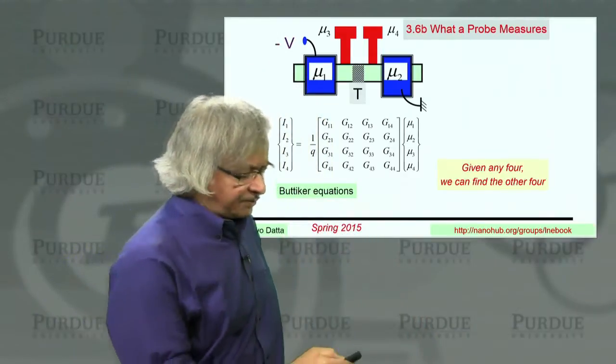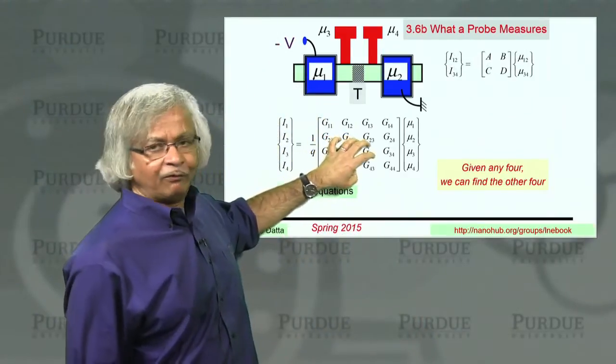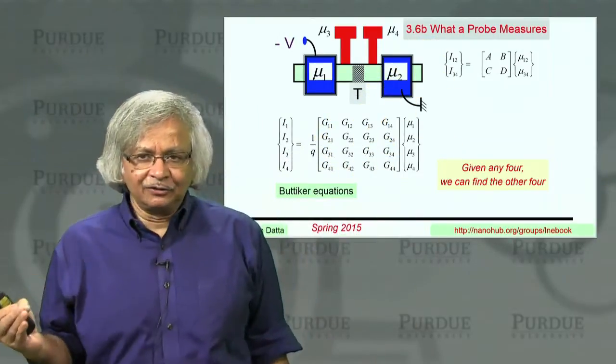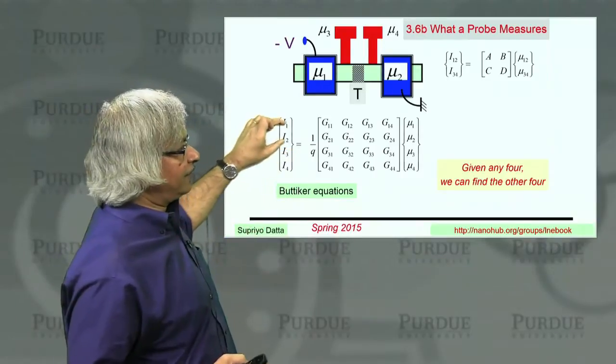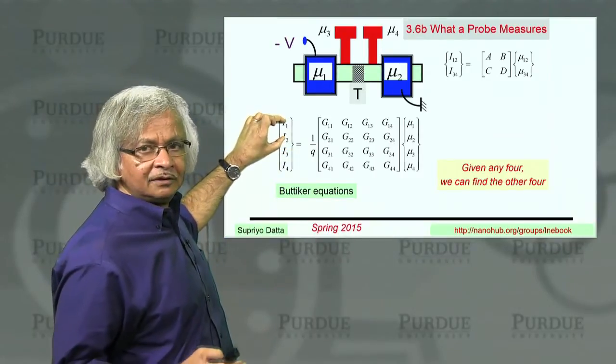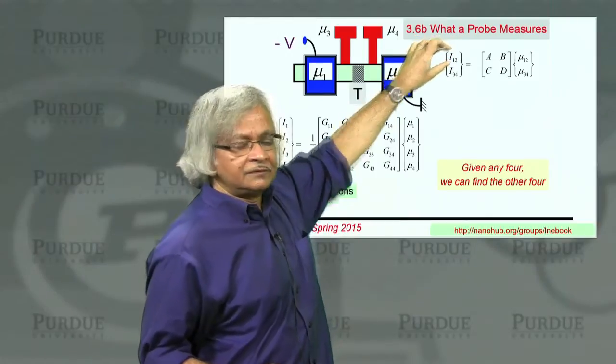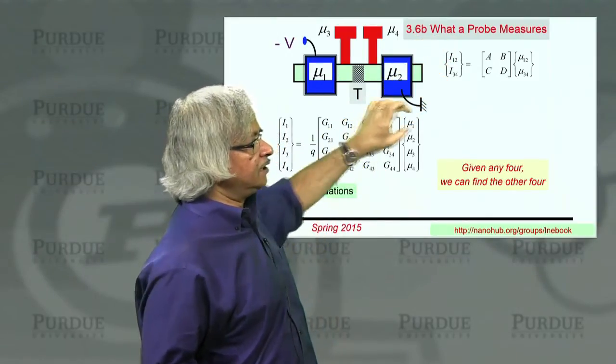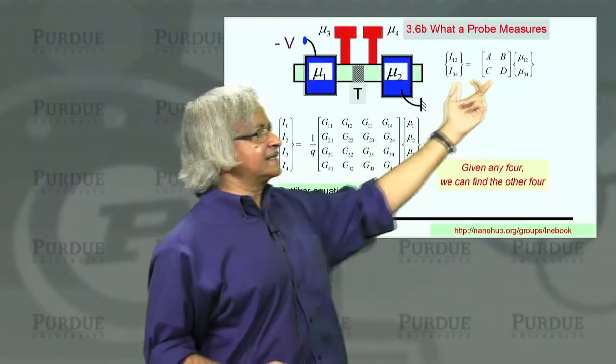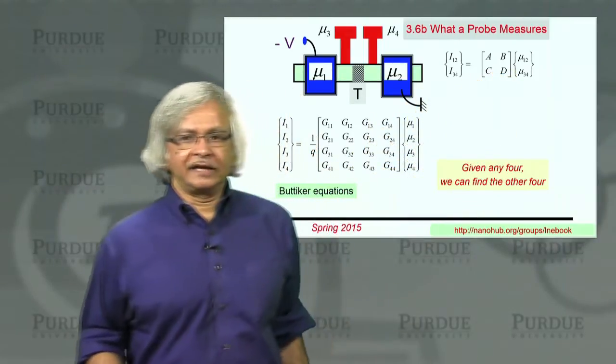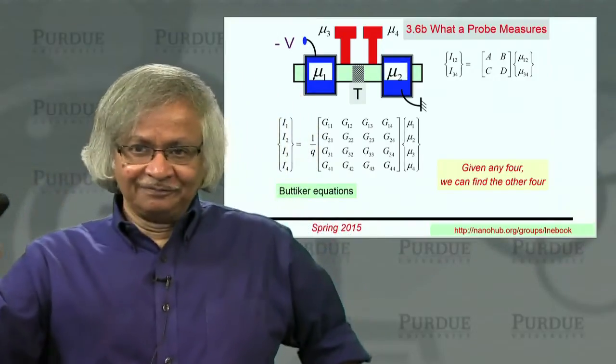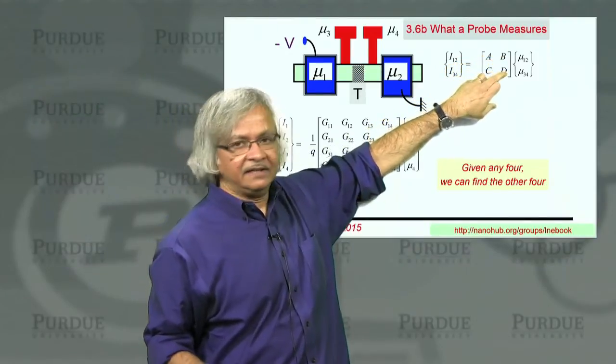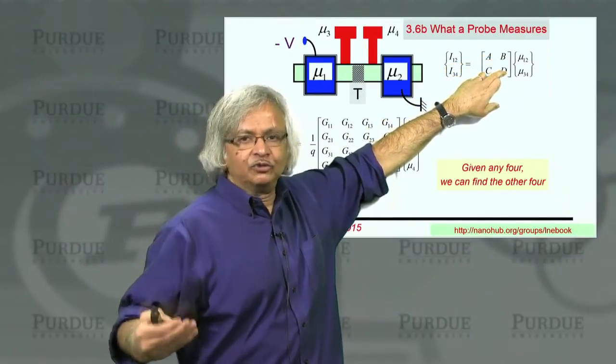So I could do something like this. Let's take this four by four and write it in a form so it kind of looks apparently two by two. That is, what I do is I take this I1 and I2 and give it a name, I1,2. I3 and I4, give it a name, I3,4. Similarly, mu1,2 and mu3,4. And then this conductance matrix kind of looks like two by two. But of course, it's still four by four. It looks two by two, but then each one of these elements, this A, B, C, and D are two by two matrices.